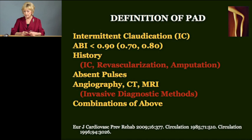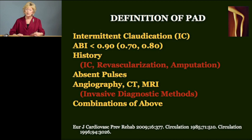Now the definition of PAD — over the years there have been a number of different definitions used to define PAD. In older studies, you will find quite frequently that intermittent claudication was used to define PAD. However, that's going to significantly understate the prevalence of the disease because only 7 to 15 percent of people with PAD actually have the classic symptoms of intermittent claudication. ABI less than 0.90 is a very common definition. The history of the disease — represented by history of claudication, history of revascularization, and history of amputation — and absent pulses have also been used, as well as invasive studies such as angiography, MRI, CAT scans, and combinations of the above.